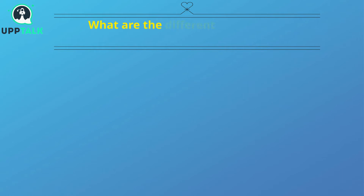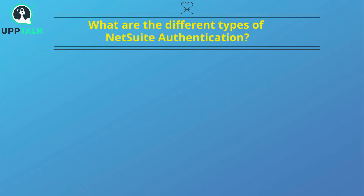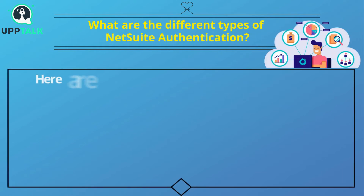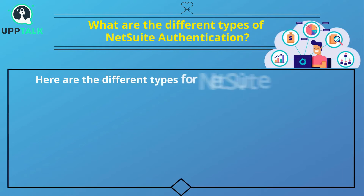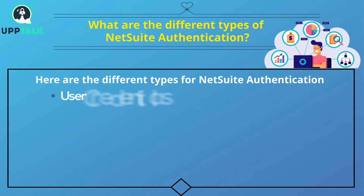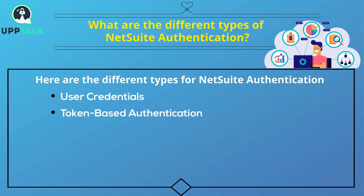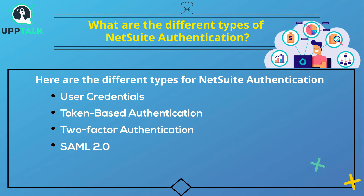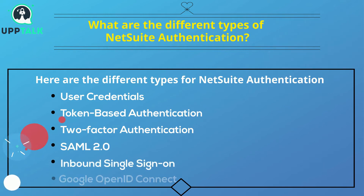What are the different types of NetSuite Authentication? The different types of NetSuite Authentication are: User Credentials, Token-Based Authentication, Two-Factor Authentication, SAML 2.0 Inbound Single Sign-On, and Google OpenID Connect.